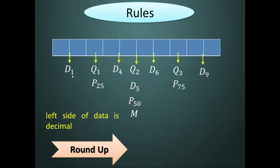Another example: if D sub 3 = 3.1, since D sub 3 is less than 50% of the data, we still round up, so 3.1 becomes 4 — the location is the 4th data. However, if the result is exact (no decimal), use it as is. For instance, if D sub 1 = 5, the location is simply the 5th position with no rounding needed. This rule applies only when a decimal answer appears.